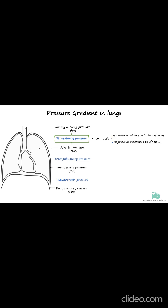Transpulmonary pressure, or transalveolar pressure, is the pressure difference between the alveoli and the pleural space. It is the pressure required to maintain alveolar inflation and is therefore sometimes called the alveolar distending pressure. All modes of ventilation increase transpulmonary pressure, either by decreasing intrapleural pressure as in negative pressure ventilators, or by increasing alveolar pressure as seen in positive pressure ventilators.